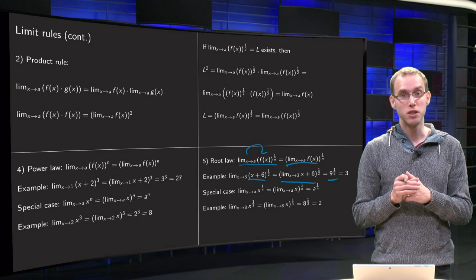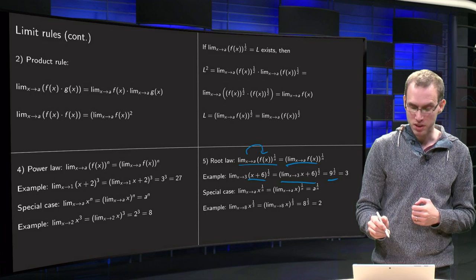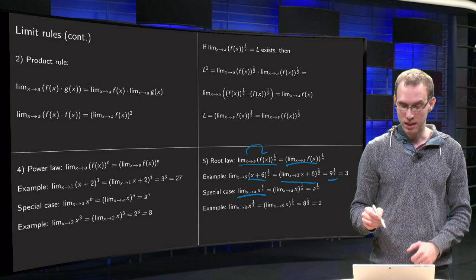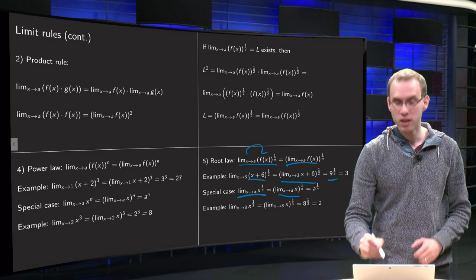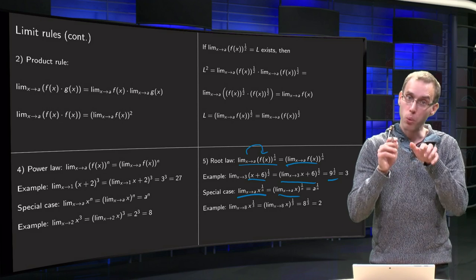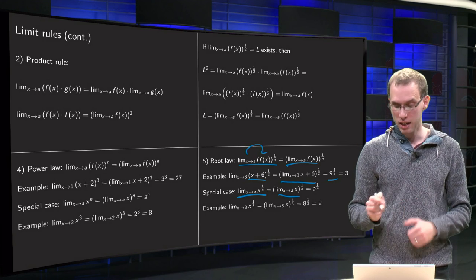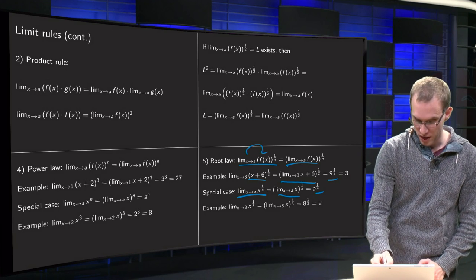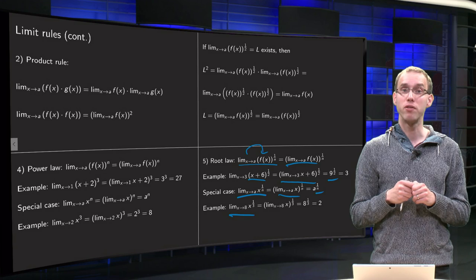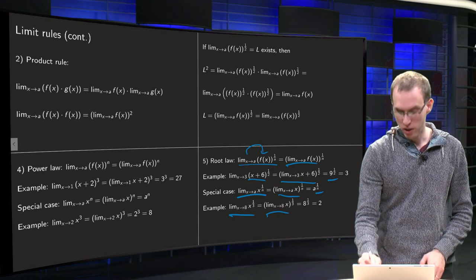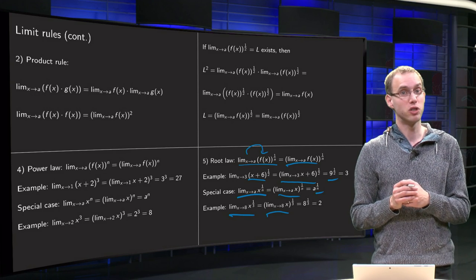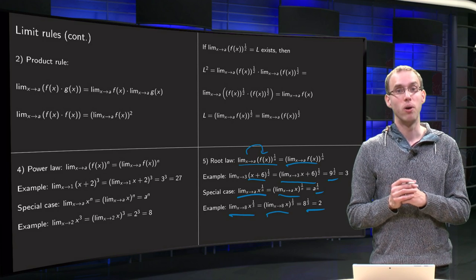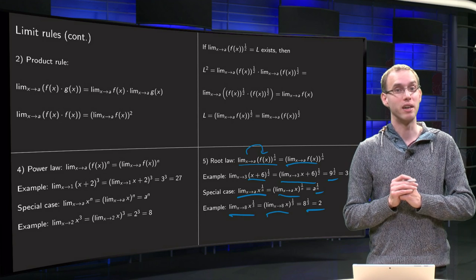A special case, similar to the power law: if you take the limit as x→a of x^(1/n), with f(x) = x, you can take the limit inside, and since the limit of x as x→a equals a, you get a^(1/n). An example: limit as x→8 of x^(1/3) — take the limit inside, limit as x→8 of x equals 8, so 8^(1/3) equals 2. That is the root law, and some examples of how you can apply it.